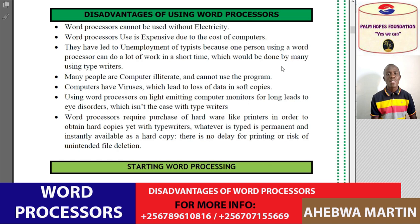Disadvantage number six: using word processors on light-emitting computer monitors for long periods leads to eye disorders, which is not the case with typewriters. Too much exposure to the light from a computer screen or monitor affects the eyes. So while we use computers, we must know that they cause problems to our eyes — a problem that does not affect people who use typewriters.